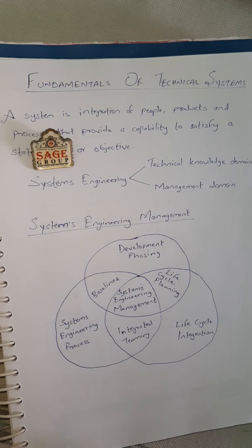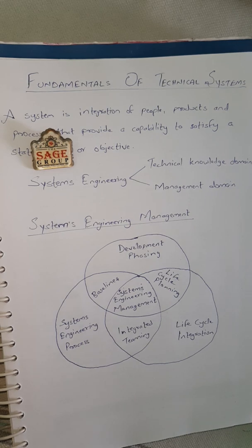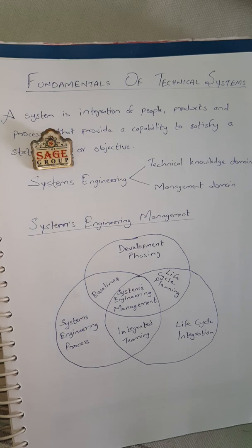Life cycle integration is necessary to ensure that the design solution is viable throughout the life of the system. It includes the planning associated with product and process development, as well as the integration of multiple functional concerns into the design and engineering process. In this manner, the product life cycle can be reduced and the need for redesign and rework is ultimately reduced.